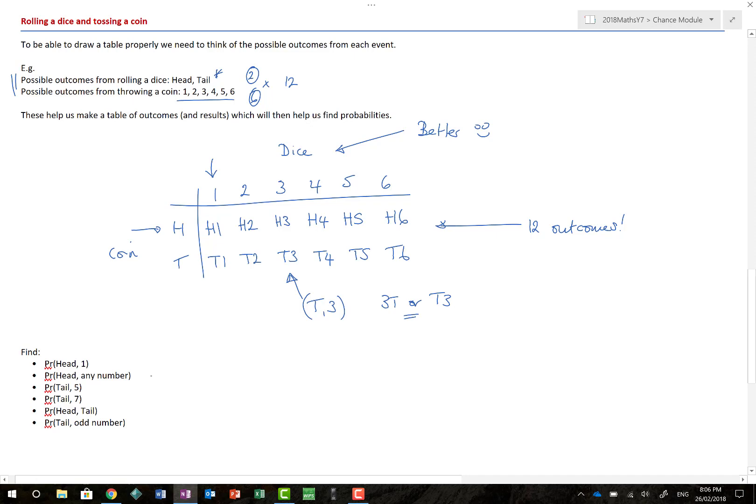So this now helps us answer our probability questions. So firstly, find the probability of a head comma one. That means find the probability of getting a head and a one. Well, how many heads and ones are there? There is one out of 12 possible outcomes. So that's head and one. Probability of a head and any number. All right. So a head and any number. Well, that's one, two, three, four, five. Six outcomes out of 12, which we must remember to cancel down.